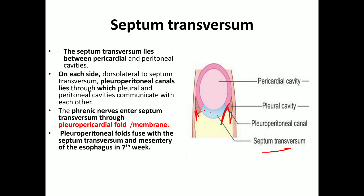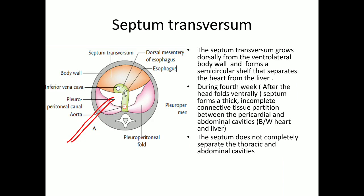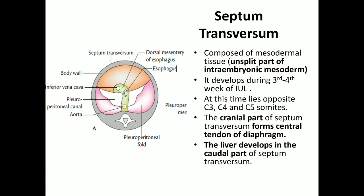The pleuroperitoneal canal is obliterated by the pleuroperitoneal fold. The pink pleuroperitoneal fold moves towards the septum transversum, obliterating the canal. It also moves towards the mesentery of the esophagus and towards the septum transversum, so this gap is filled by the pleuroperitoneal membrane, and the pleuroperitoneal canal is completely obliterated.